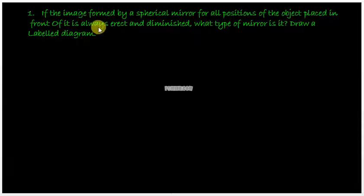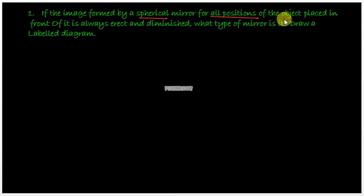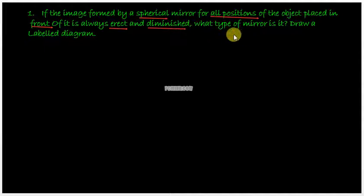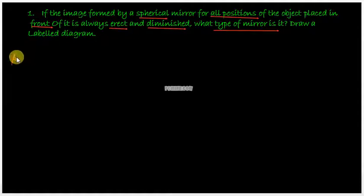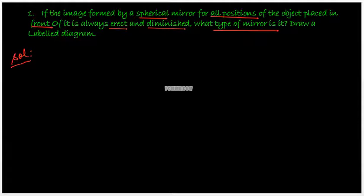Here's the first question: if the image formed by a spherical mirror for all positions of the object placed in front of it is always erect and diminished, what type of mirror is it and draw a labelled diagram? So the question says that if we get a virtual, erect, and diminished image no matter wherever you place the object, then what type of mirror is it?